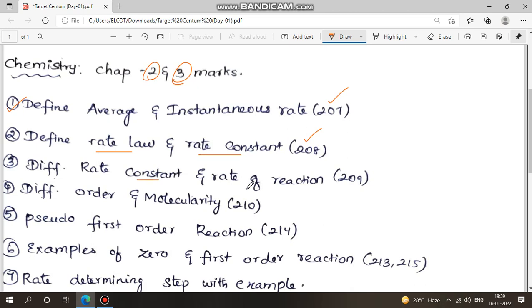Differentiate rate constant and rate of the reaction, 209. Differentiate order and molecularity of the reaction, 210. Pseudo first order reaction, 214.